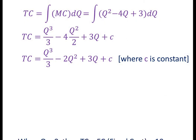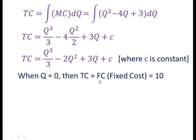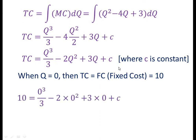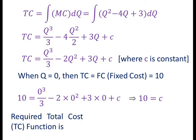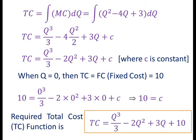When q = 0, TC equals the fixed cost FC = 10. Substituting q = 0 into the TC equation: 10 = 0³/3 - 2(0²) + 3(0) + c, which implies c = 10. Therefore, the required total cost function is TC = q³/3 - 2q² + 3q + 10. In this example, the constant term c of the integrated function is nothing but the fixed cost, which equals 10.